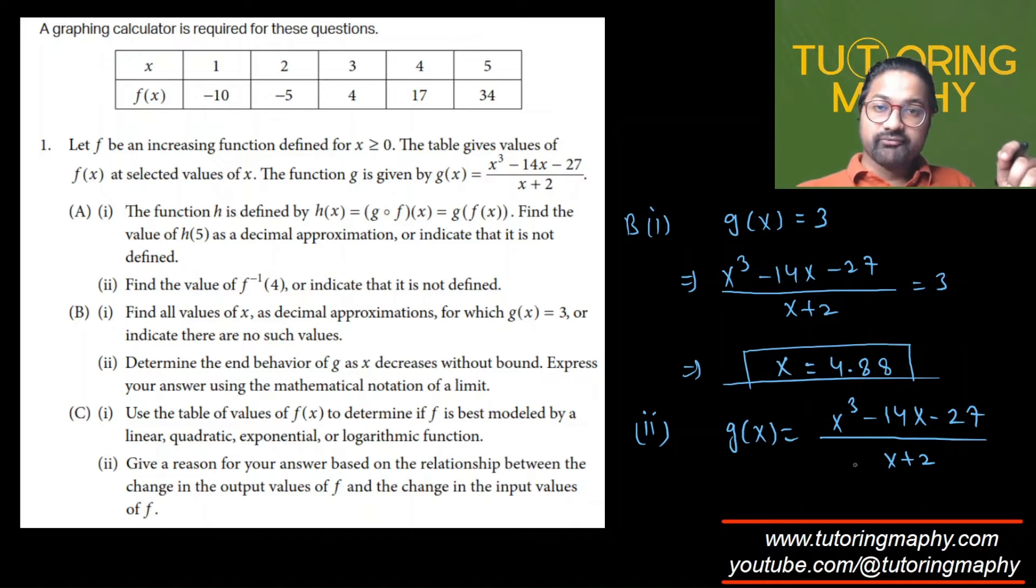Always remember: to find the end behavior of a rational function, look at the overall degree. Locate the degree of the numerator, which is 3 (x cubed), and the degree of the denominator, which is 1. Then do 3 minus 1, because exponents in division should be subtracted. Three minus one is 2, so the overall degree of this rational function is 2.